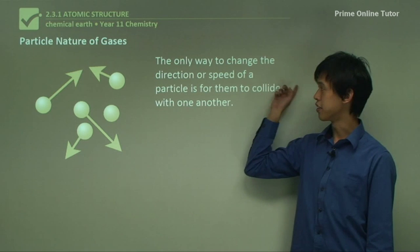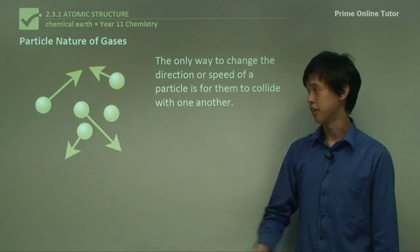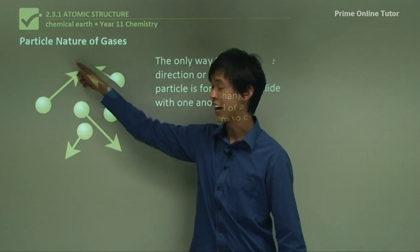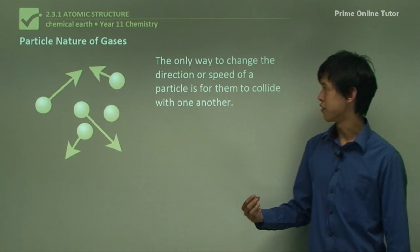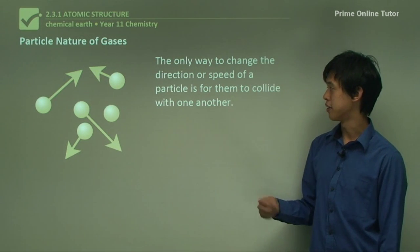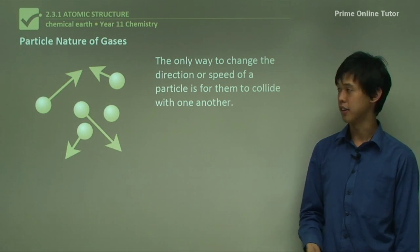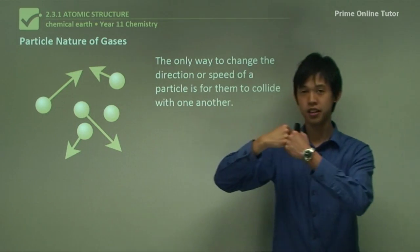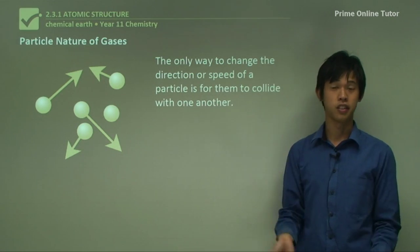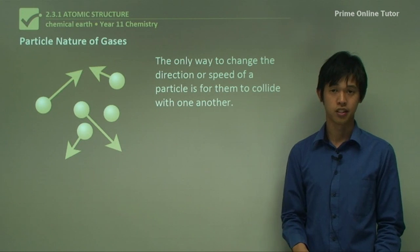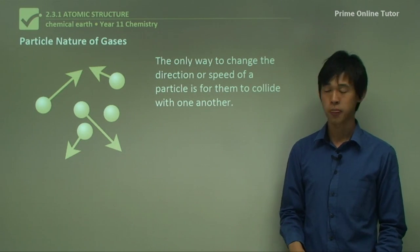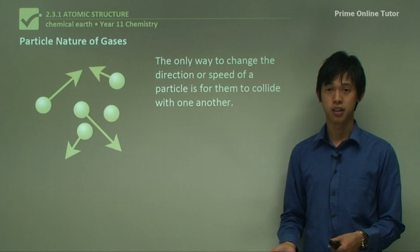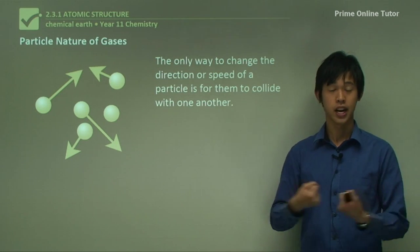The only way to change the direction or speed of a particle is for it to collide with another particle. So if two particles collide, they bounce off each other and travel at different speeds and in different directions. That's the only way we can change their direction or speed — by them colliding with one another.